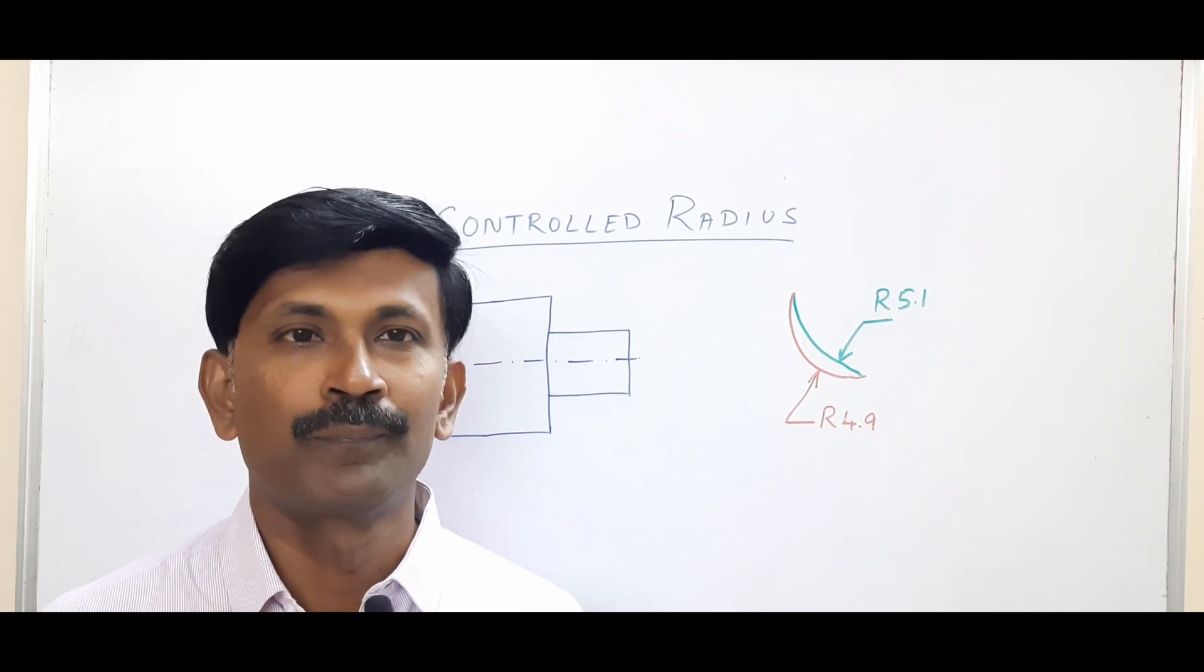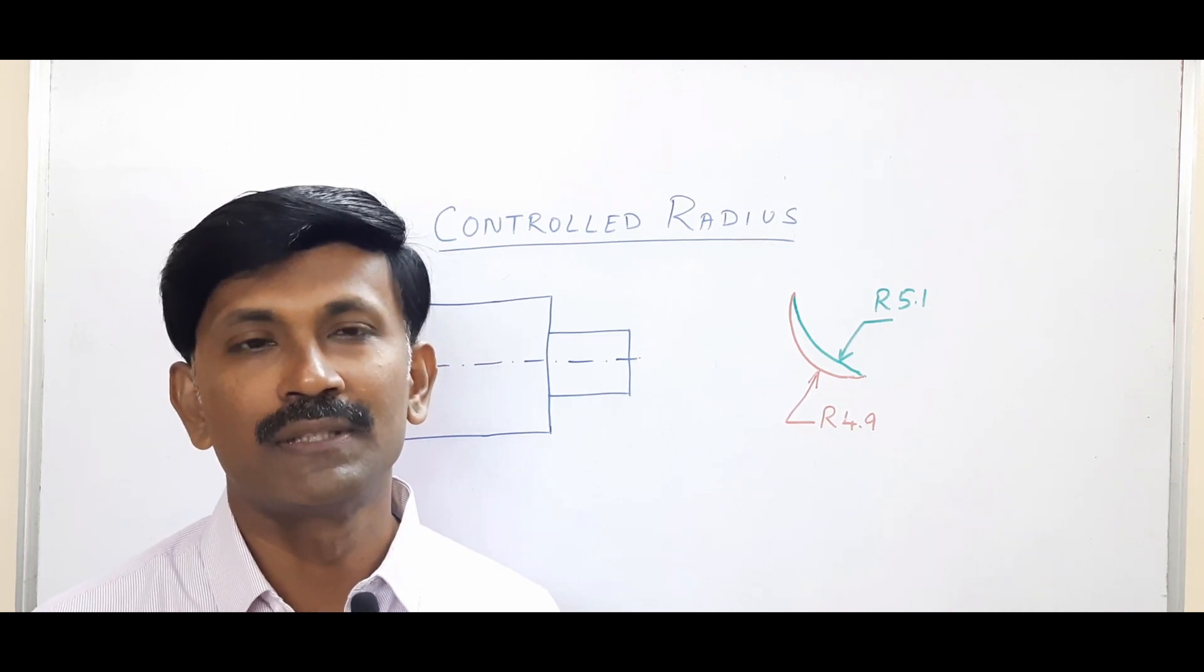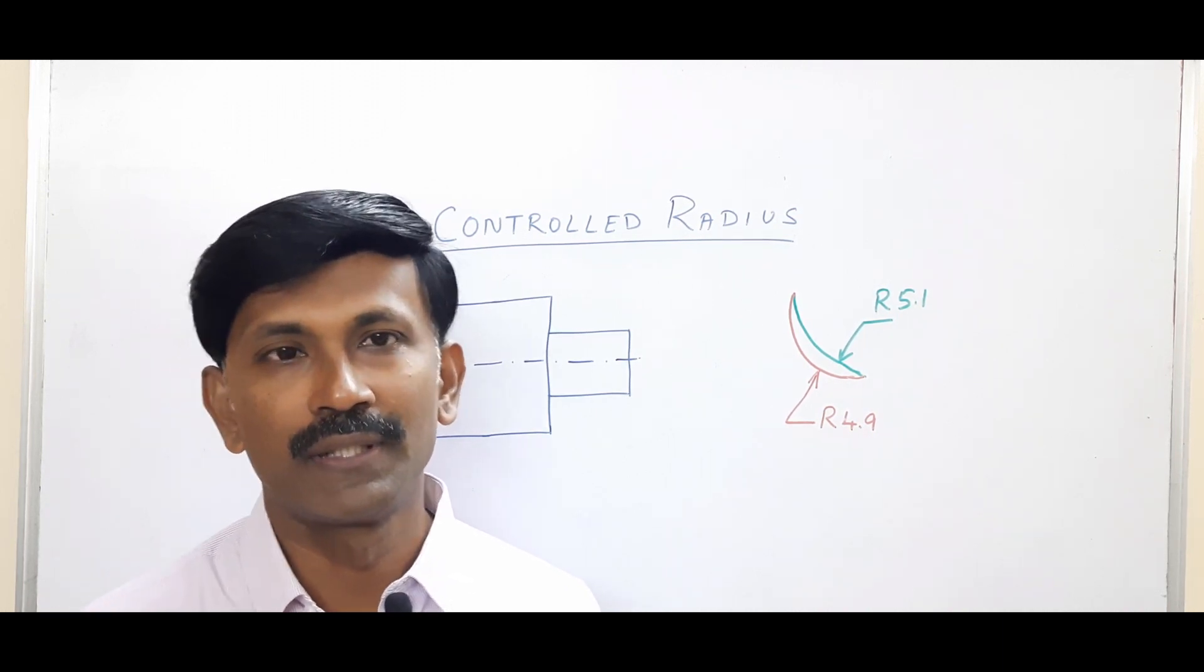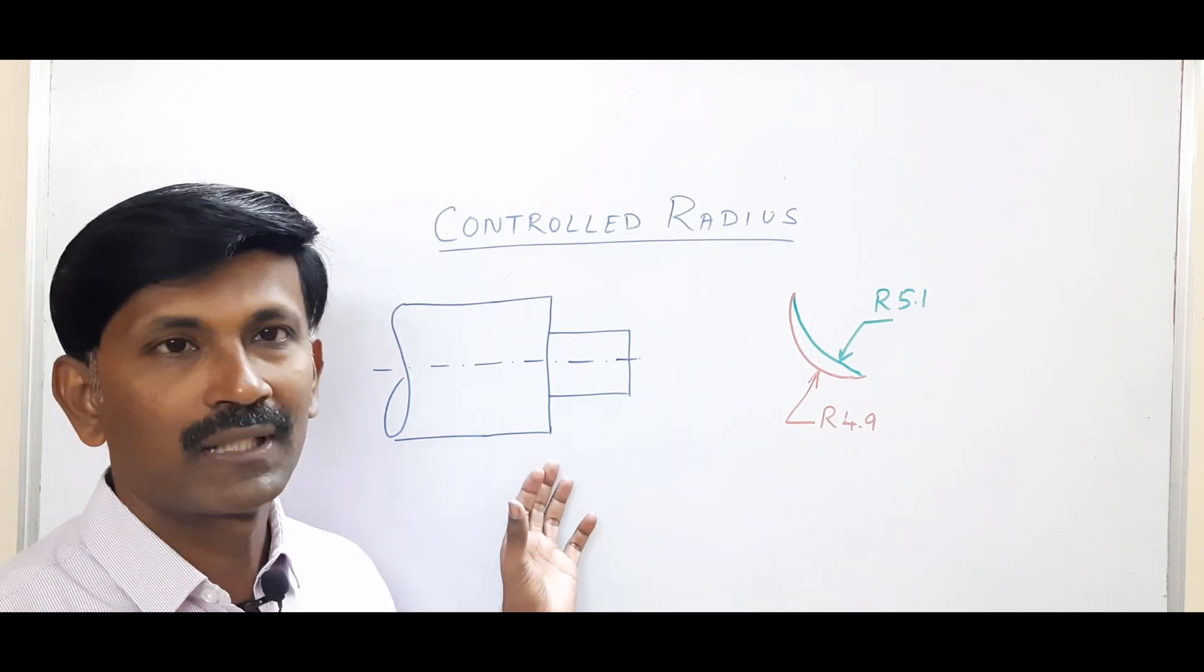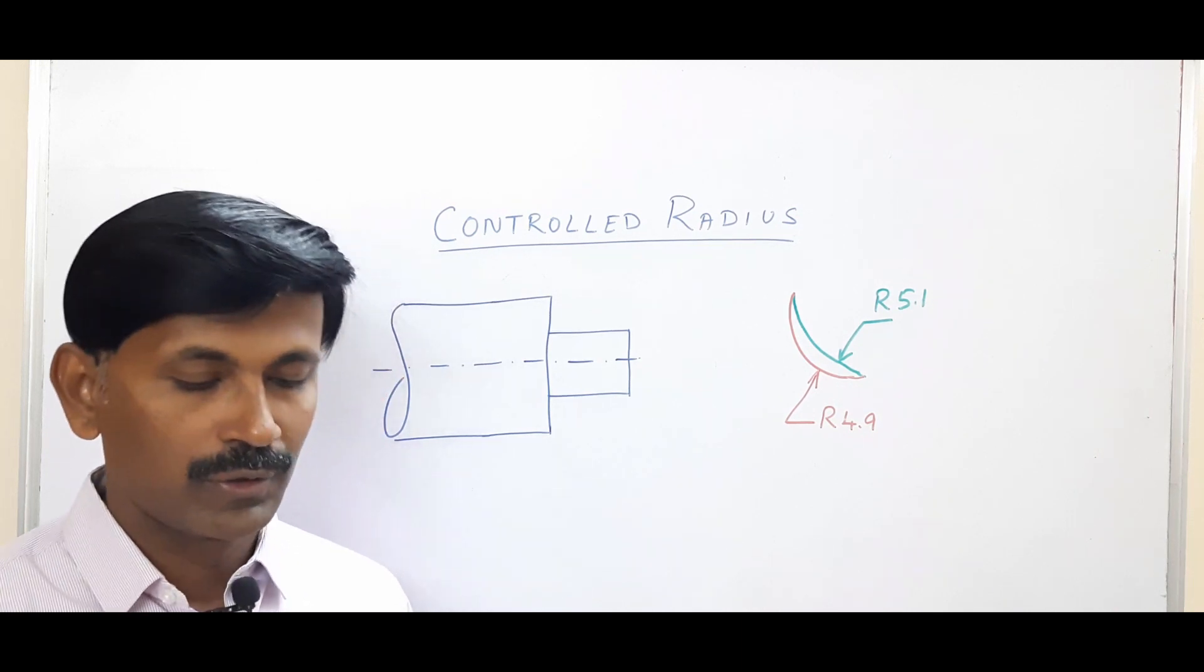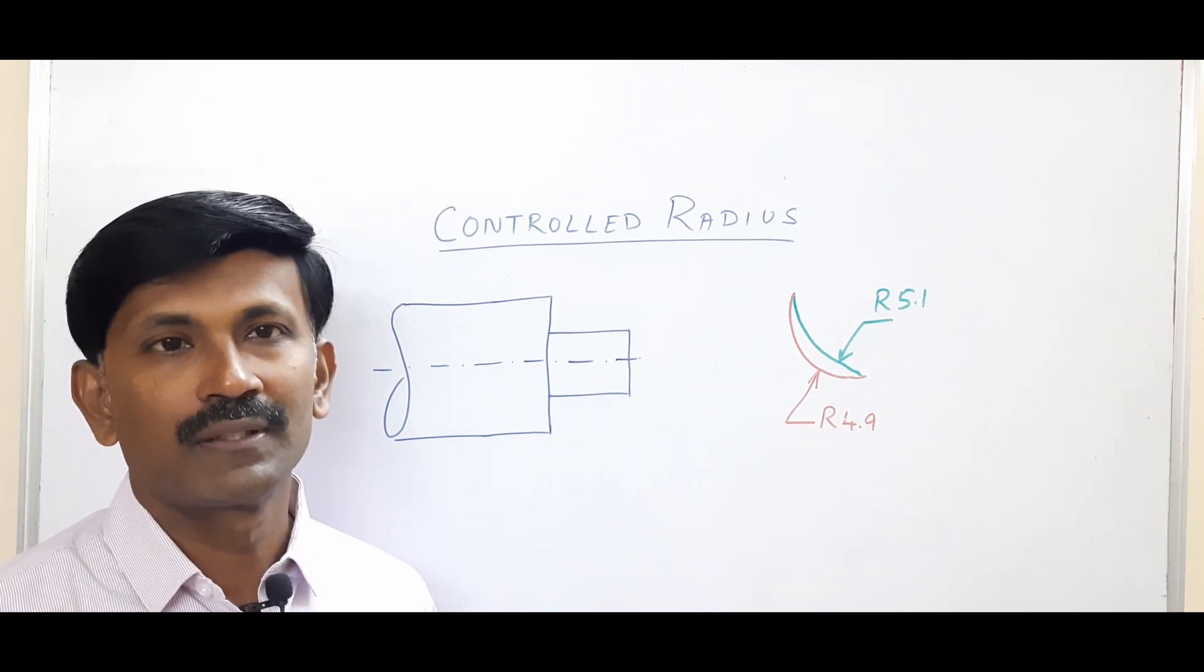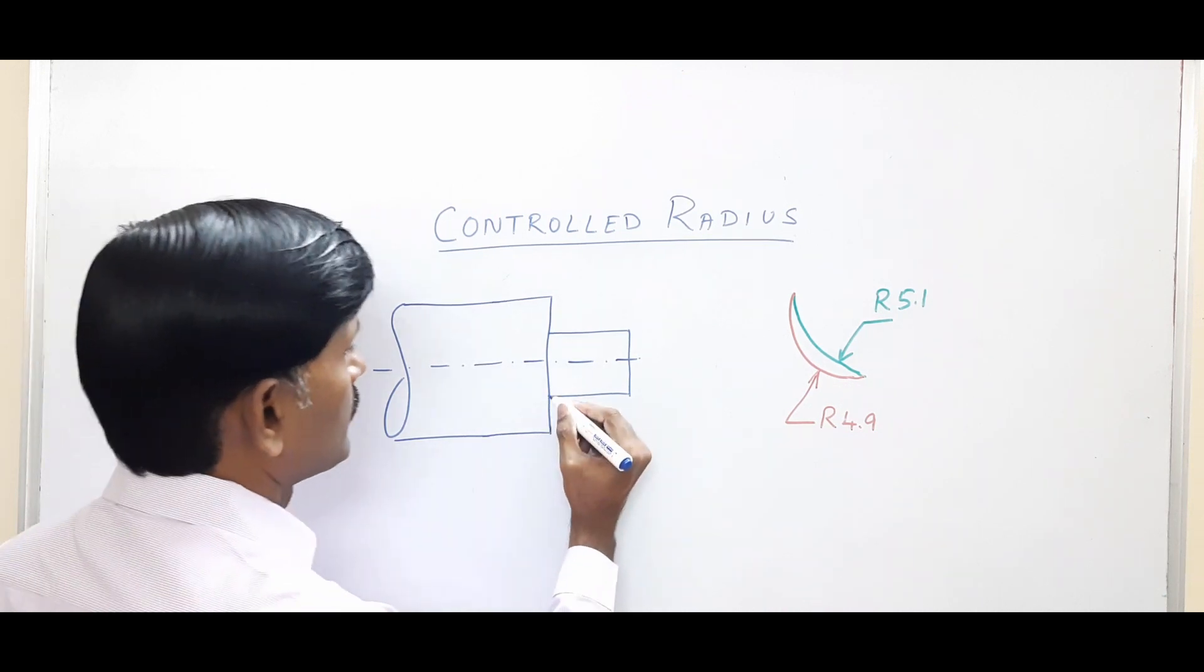Hi, this is Balnik Eyelash. In this video, I am going to discuss a key terminology in GD&T called controlled radius. Most of you are aware that whenever we have a part with sharp edges, there would be stress concentration. So usually what we do is we provide fillet radius to eliminate the stress concentration.